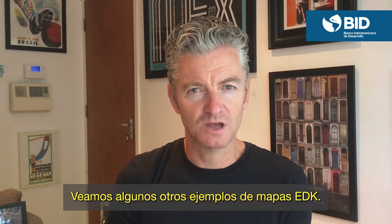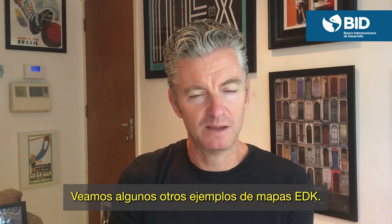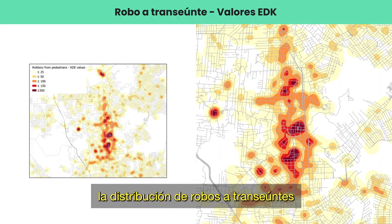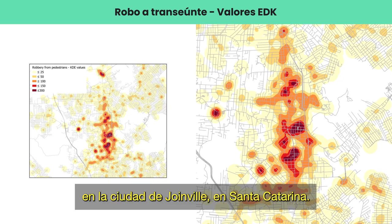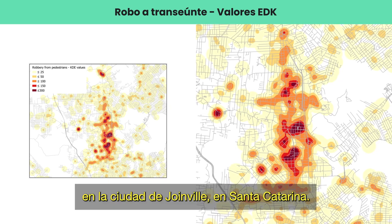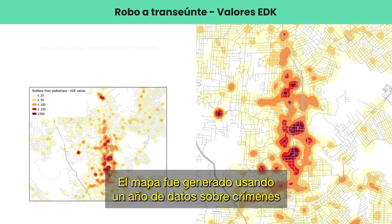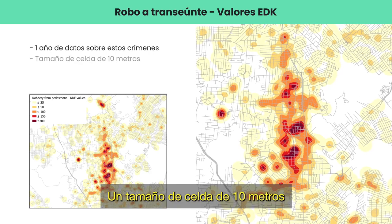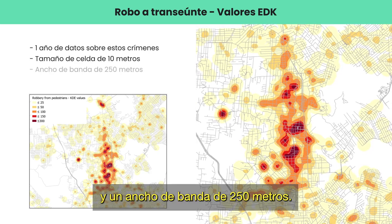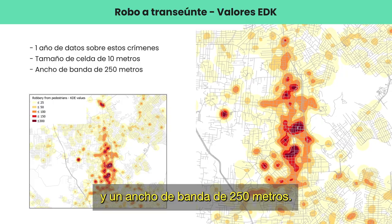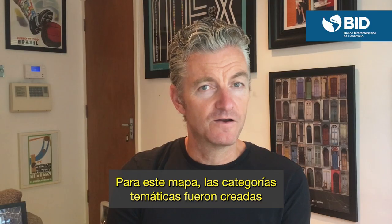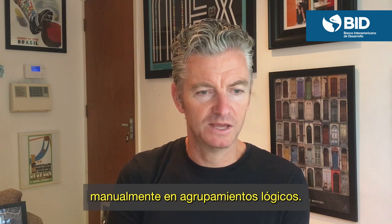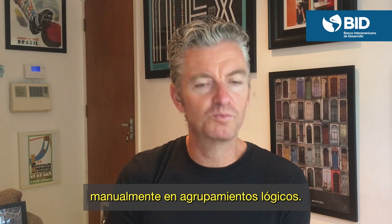This first map shows the distribution of robberies against pedestrians in the city of Joinville in Santa Catarina. The map was produced using one year of crime data, a cell size of 10 meters and a bandwidth size of 250 meters. For this map the thematic categories were created manually into some logical groupings.